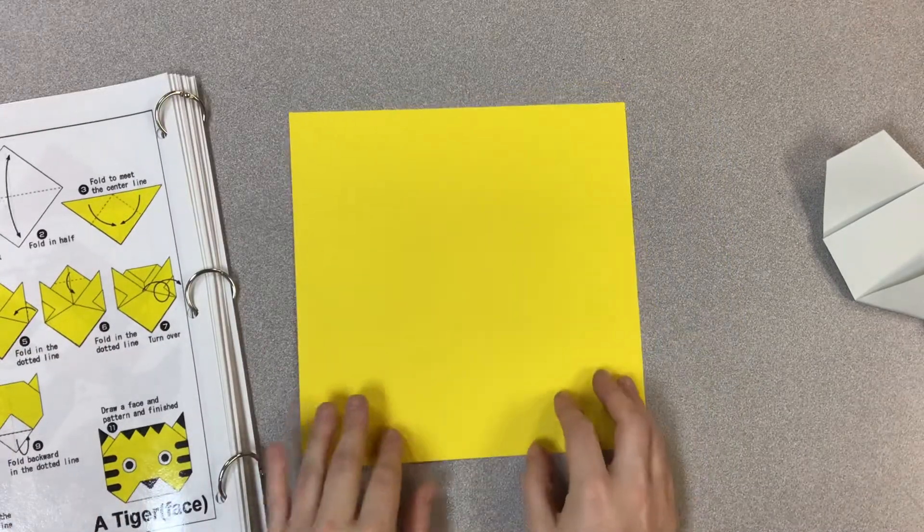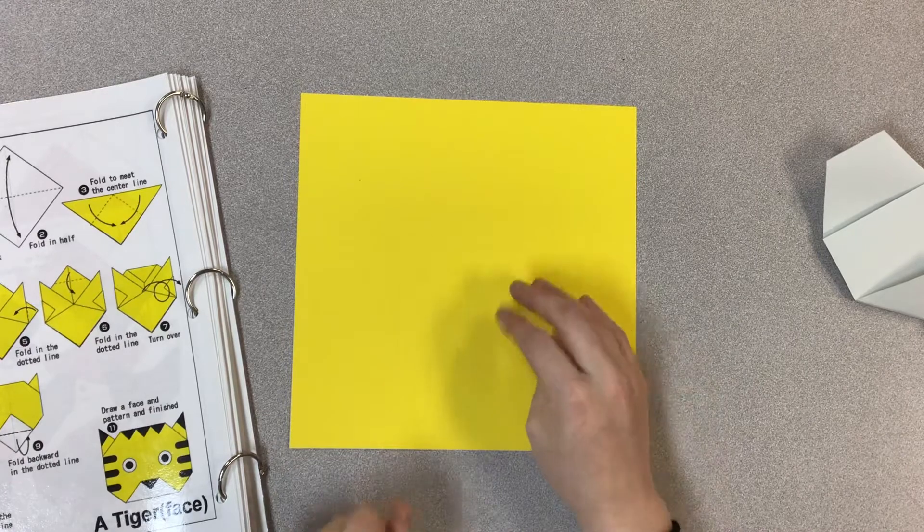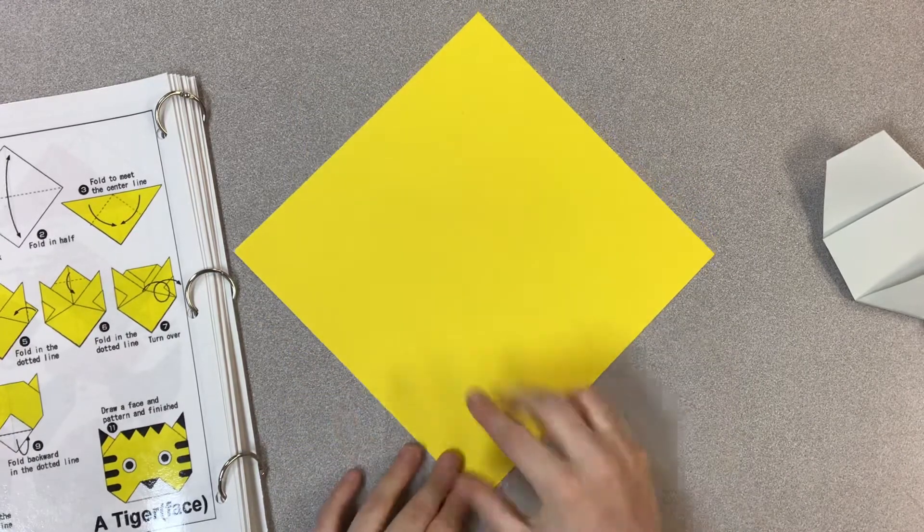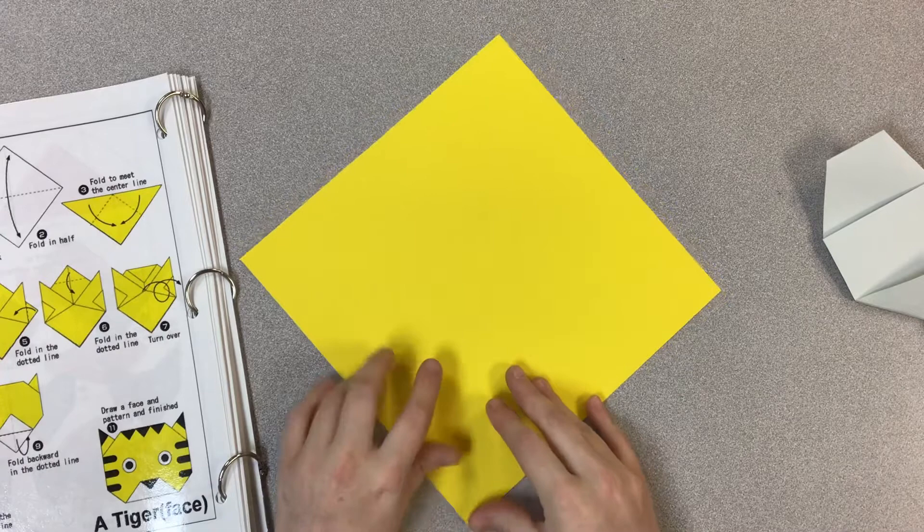So the first thing I'm going to do is fold in half. I'm going to flip it so it's like a diamond, and I'm going to fold in half so it creates a triangle.